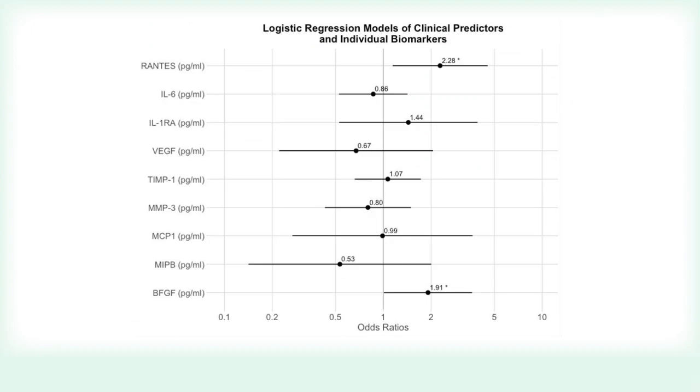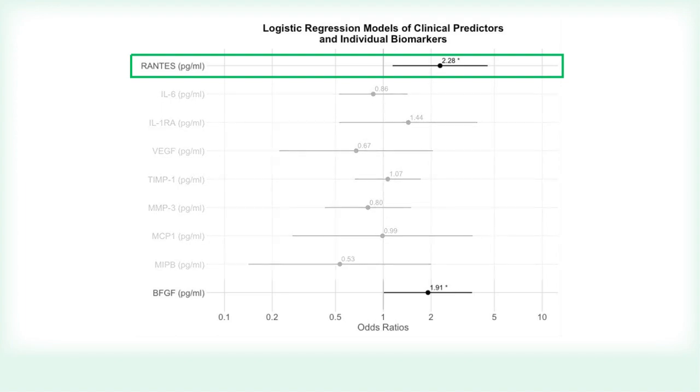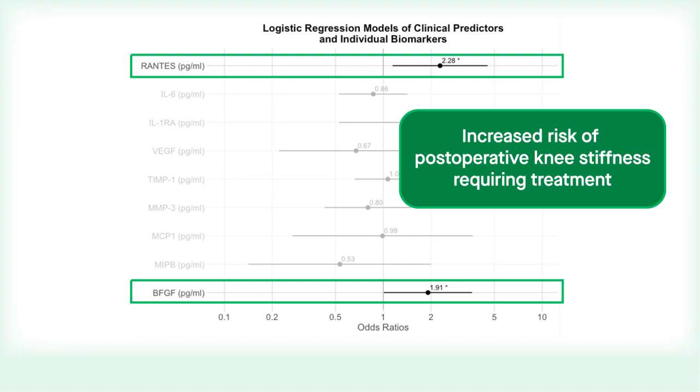Results showed that concentrations of RANTES were significantly higher among patients who developed arthrofibrosis requiring further surgery. Single biomarker models revealed that RANTES, as well as BFGF, were associated with an increased risk of developing postoperative knee stiffness requiring treatment.